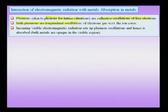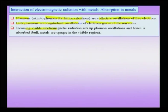Bulk plasmons are longitudinal oscillations of electrons with respect to the ion cores — analogous to sound waves traveling through air, which are also longitudinal. The incoming electromagnetic wave sets up plasmon oscillations, implying a resonance: the external electromagnetic field is absorbed by the medium as it sets up these free-electron oscillations. Because of this plasmon resonance, metals are typically opaque — they do not transmit light in the visible radiation region.